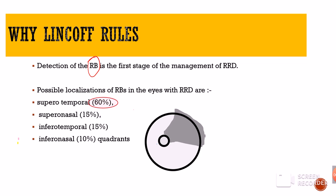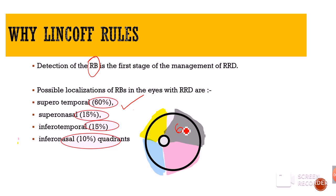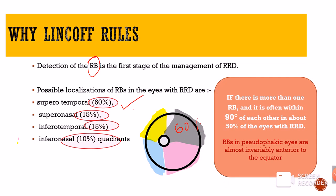Possible localization of RD in eyes with RRDR: superior temporally about 60% — meaning most breaks localize to the superior temporal quadrant. The superior nasal quadrant accounts for about 15%, inferior temporal 15%, and inferior nasal 10%. So retinal breaks are most common in the superior temporal quadrant. If there are more than one retinal break, the other break will usually be within 90 degrees of the first break, which is true in about 50% of eyes with rhegmatogenous RD.